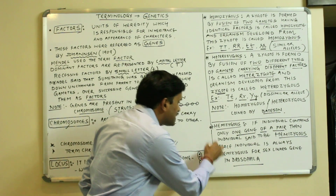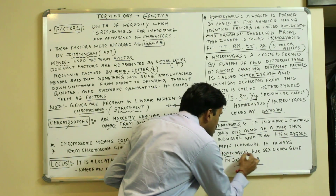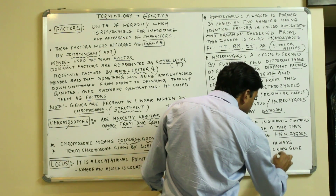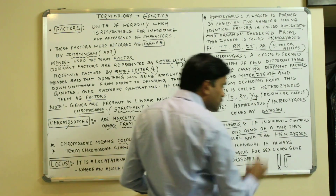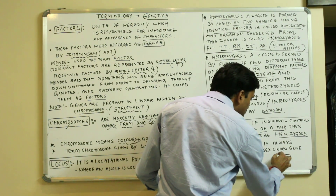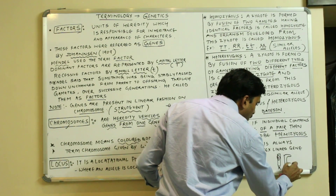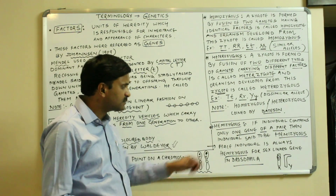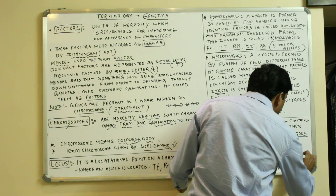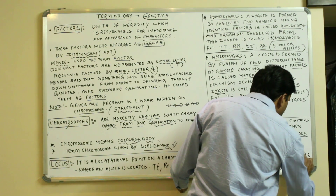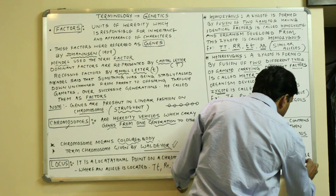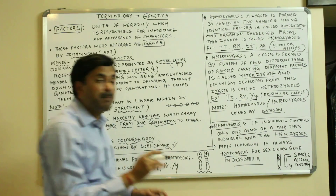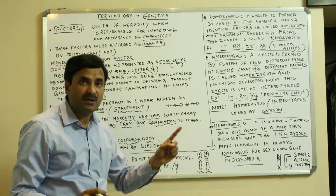For example, the male individual is always hemizygous for sex-linked genes in Drosophila. In Drosophila, the male has an X chromosome and a Y chromosome. If the X chromosome is bearing a gene, the Y chromosome — its counterpart — is not having that gene. This means it is a hemizygous condition. We can also say that hemizygous means a single allelic condition — only one allele is present rather than a pair.